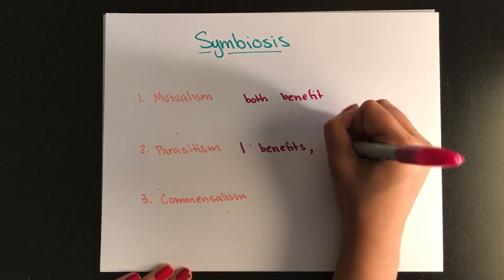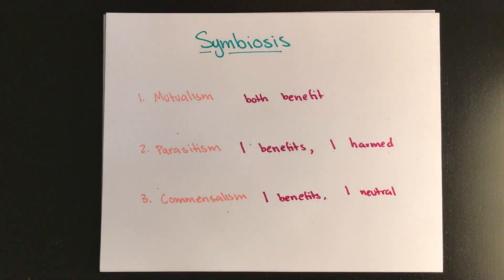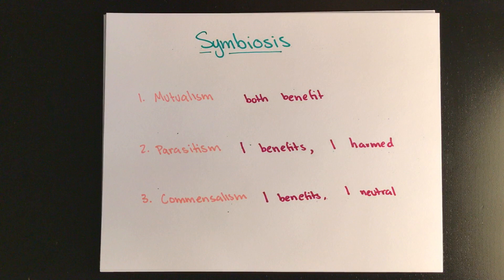Parasitism is when one organism benefits and one is harmed, such as a tapeworm. And commensalism is when one organism has benefited and the other is completely neutral. It doesn't care if it's there or not. And that's pretty much all you need to know about behavior. Hopefully this was pretty short.